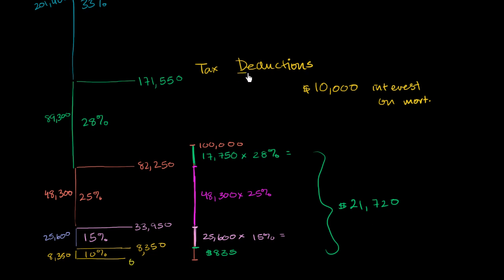The deduction doesn't happen from the taxes you pay. The deduction happens from your stated income. So if this person right here had a $10,000 tax deduction, instead of saying that they made $100,000 that year, they would say that they made $90,000.